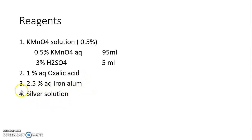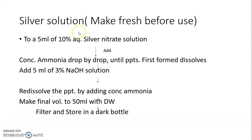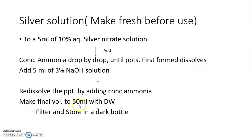The silver solution should be freshly prepared before use. Take 5 ml of 10% aqueous silver nitrate solution, then add concentrated ammonia drop by drop until the precipitates first formed dissolve. Then add 5 ml of 3% NaOH solution. Redissolve the precipitate by adding concentrated ammonia drop by drop until the precipitates dissolve. Make the final volume to 50 ml with distilled water, filter, and store in a dark bottle.